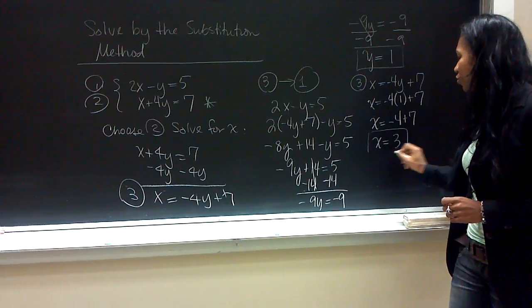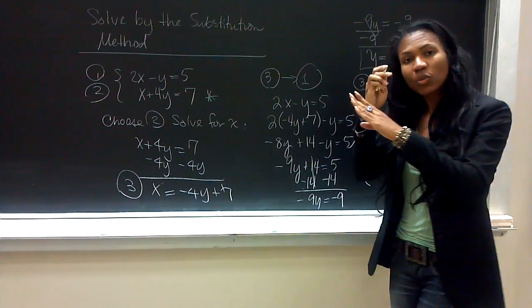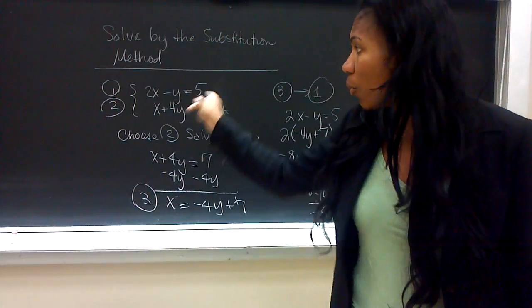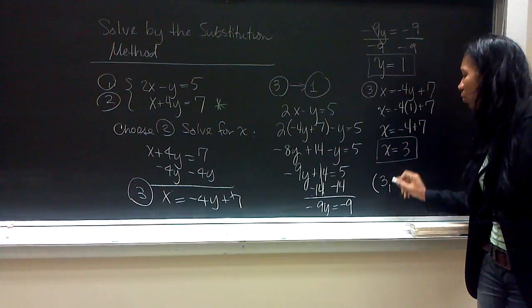So, our overall result for this entire system is where both the x and the y location is where both of these lines cross. So, this is 3, 1.